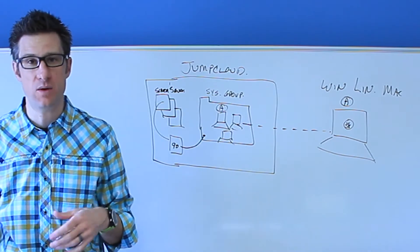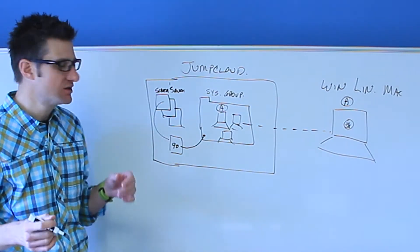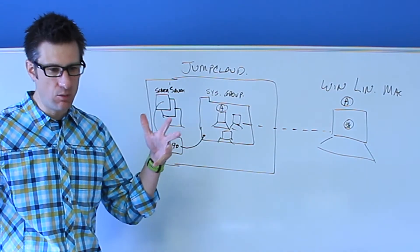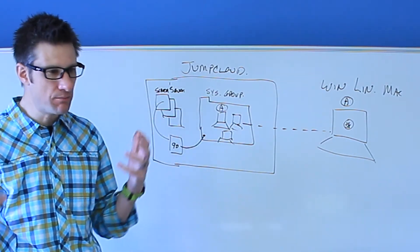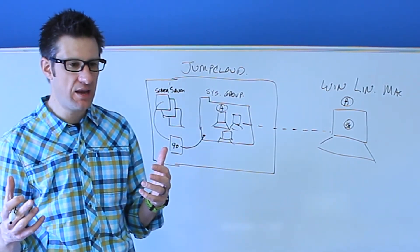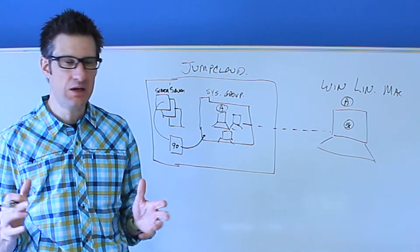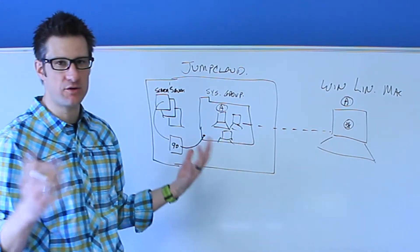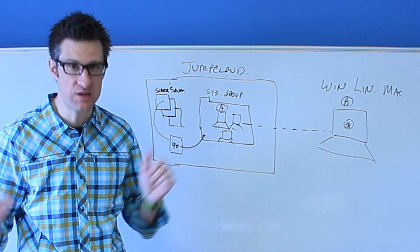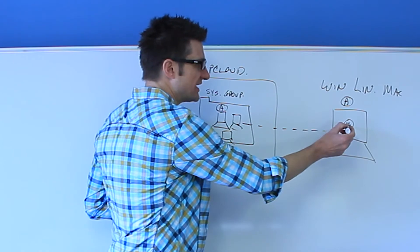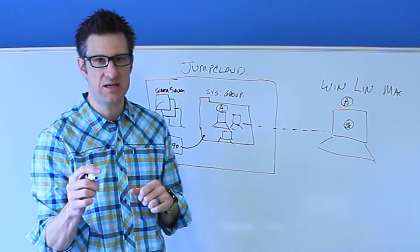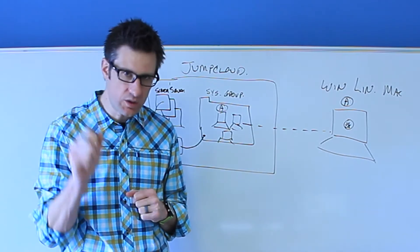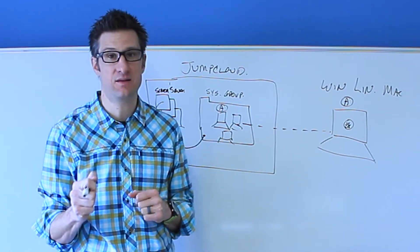The same thing applies for macOS with system preferences. So you have control over that as well. But assume that in some way the end user can make a modification and revert the screensaver setting in our example here to some other number like zero. The intelligence of our policy system on the agent will overwrite any of those changes within 90 seconds. So we will keep the policy resilient in this way.